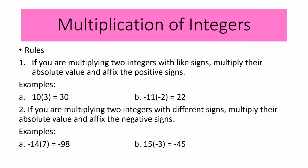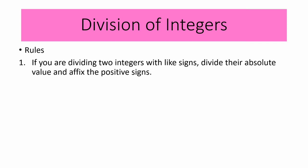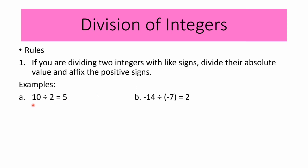Now let us proceed with the division of integers. The rules are the same as for multiplication. First rule: if you are dividing two integers with like signs, divide their absolute values and affix or copy the positive sign. When dividing two integers with like signs, the quotient is always positive. For example: 10 divided by 2 equals positive 5. Letter B: negative 14 divided by negative 7 equals positive 2.